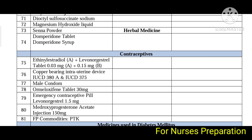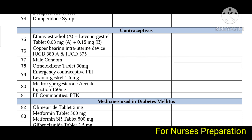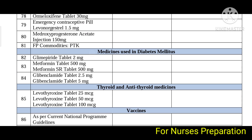Contraceptives included in this list are ethinyl estradiol with levonorgestrel, copper-bearing intrauterine devices IUCD 380 and IUCD 375, male condoms, meloxifene tablets, emergency contraceptive pills levonorgestrel 1.5 mg, and medroxyprogesterone acetate injection 150 mg.